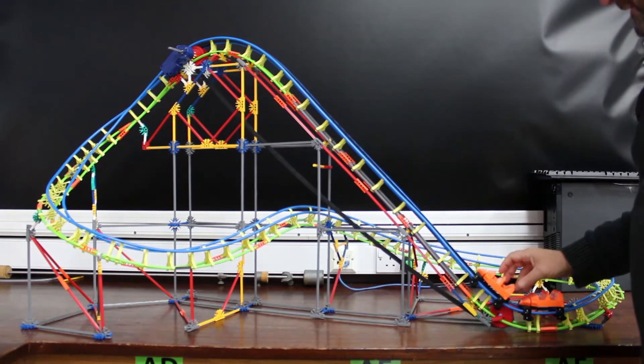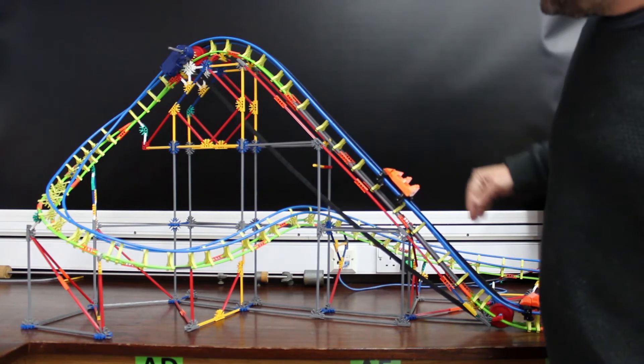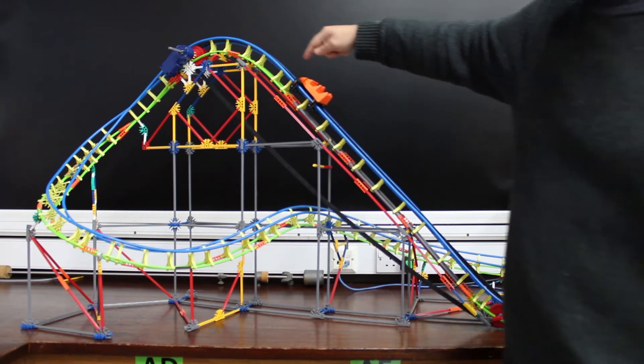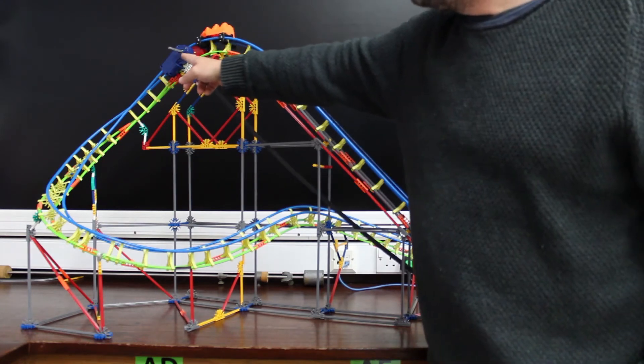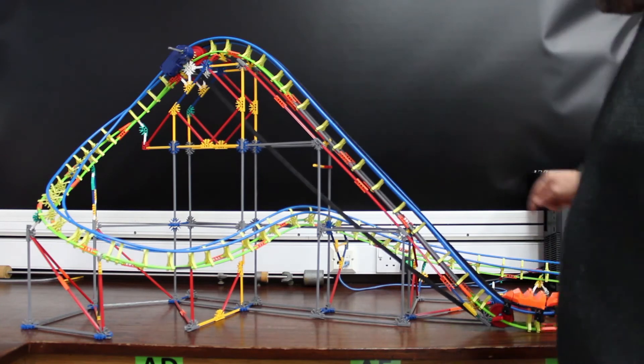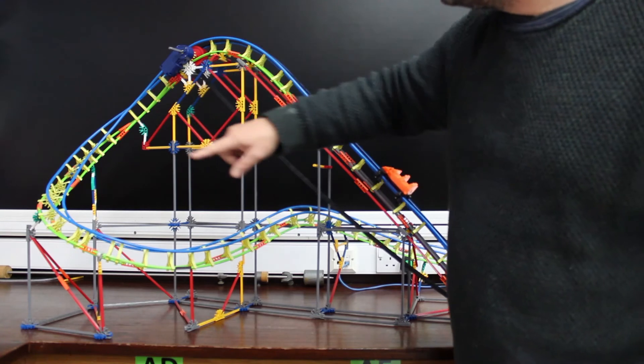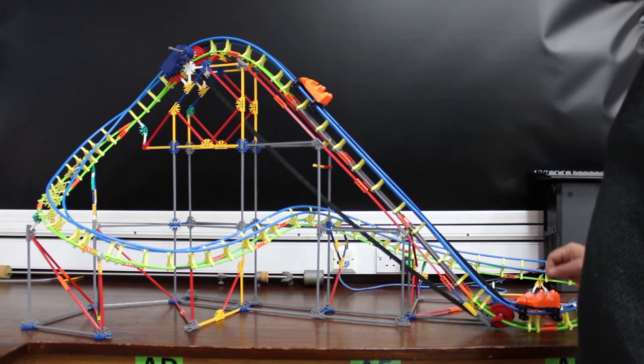The motor is doing work lifting the cart up against gravity, so there is work being done converting the battery, the chemical energy in the battery, to gravitational potential energy. And when it gets to the top, that gravitational potential energy is then converted into kinetic energy as it accelerates down the slope.